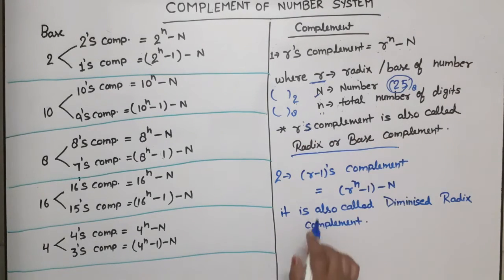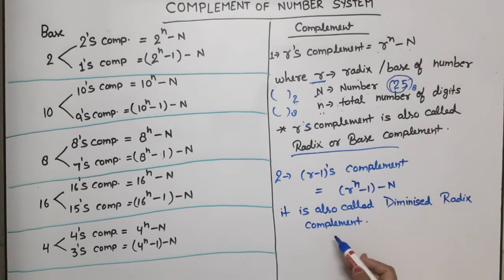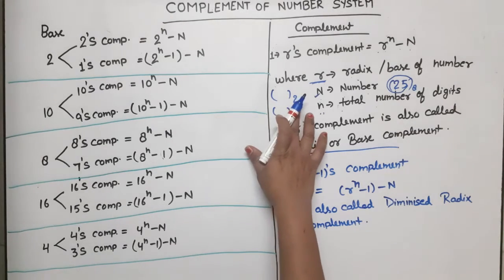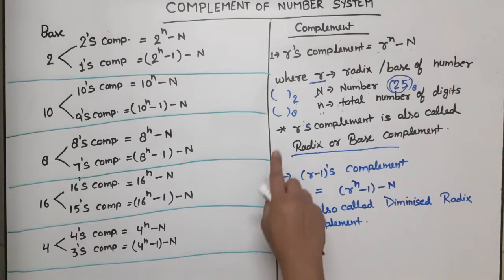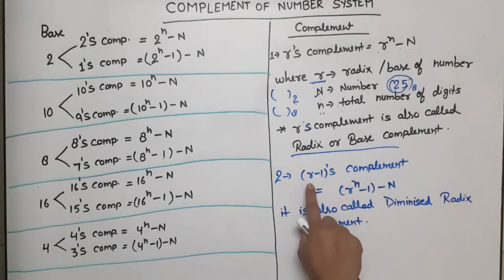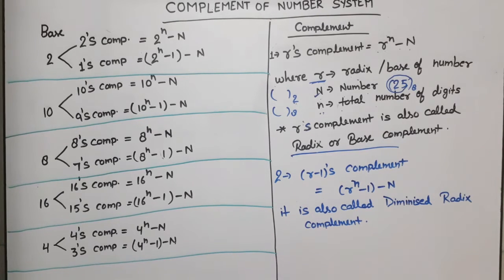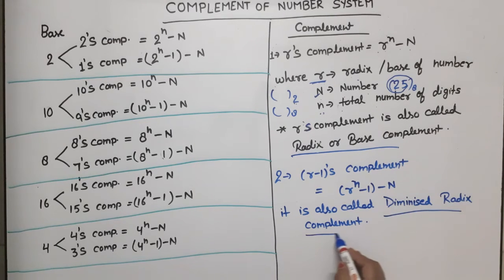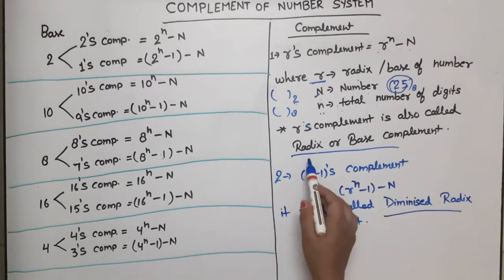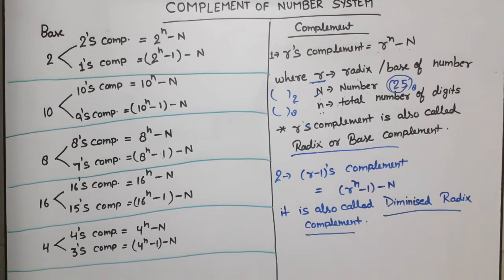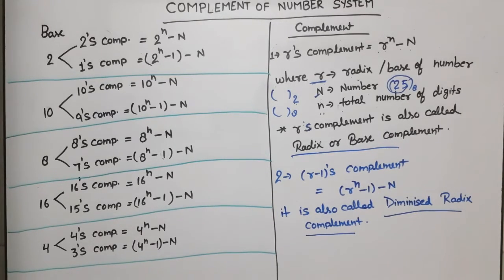Now, r minus 1's complement — this is called the diminished radix complement or diminished base complement. Here the radix has 1 subtracted from it: so for base 2, it becomes 1's complement; for base 8, 8 minus 1 gives 7's complement. So r minus 1's complement is called diminished radix complement, and r's complement is called radix or base complement.